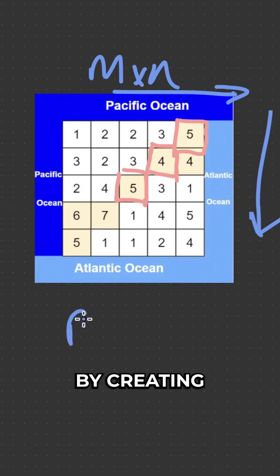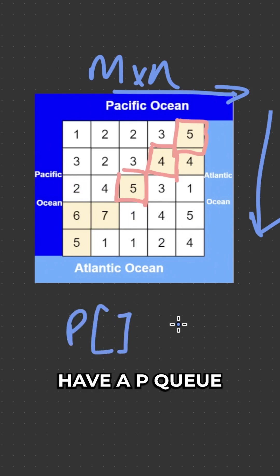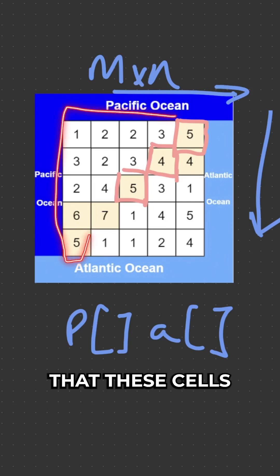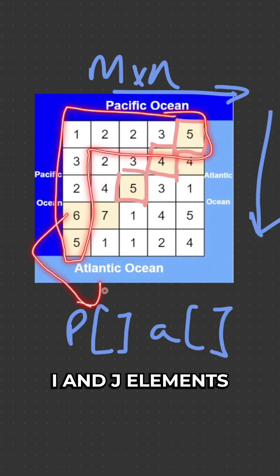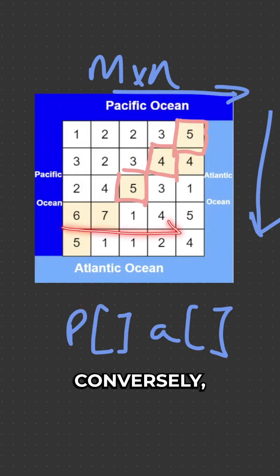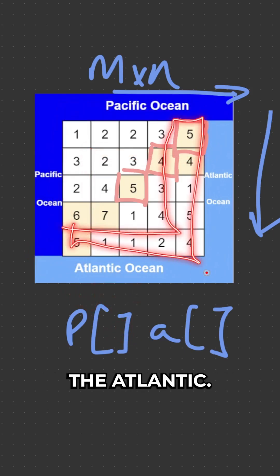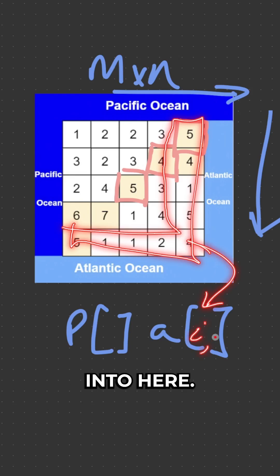We're going to start off by creating two queues: a PQ and an AQ. Considering we know that certain cells touch the Pacific, we are going to insert the I and J elements of both of these into our PQ. Conversely, the cells that touch the Atlantic — we're going to add those I and J coordinates into the AQ.